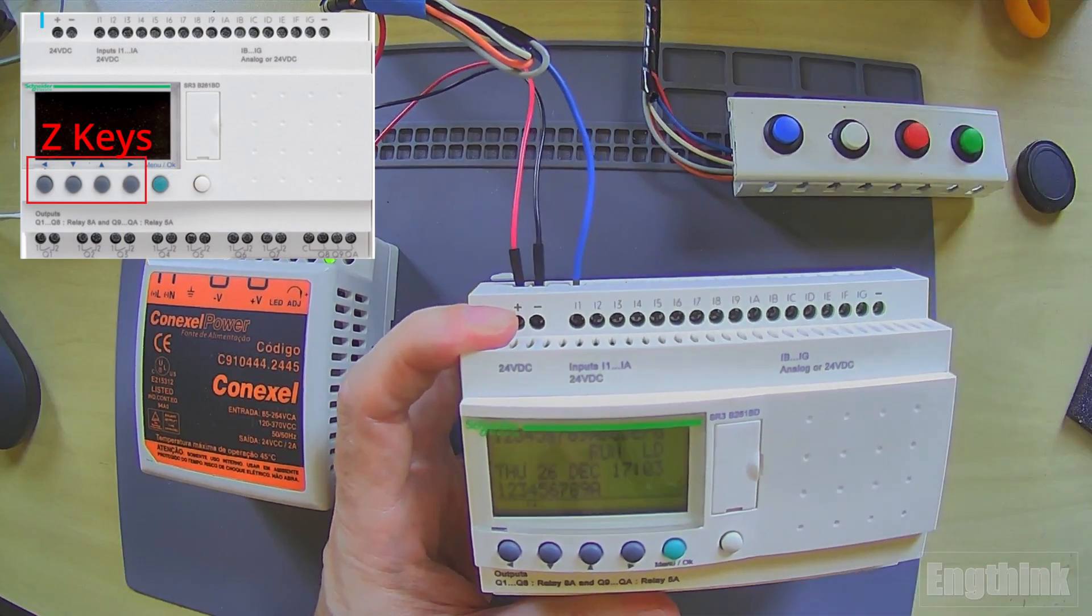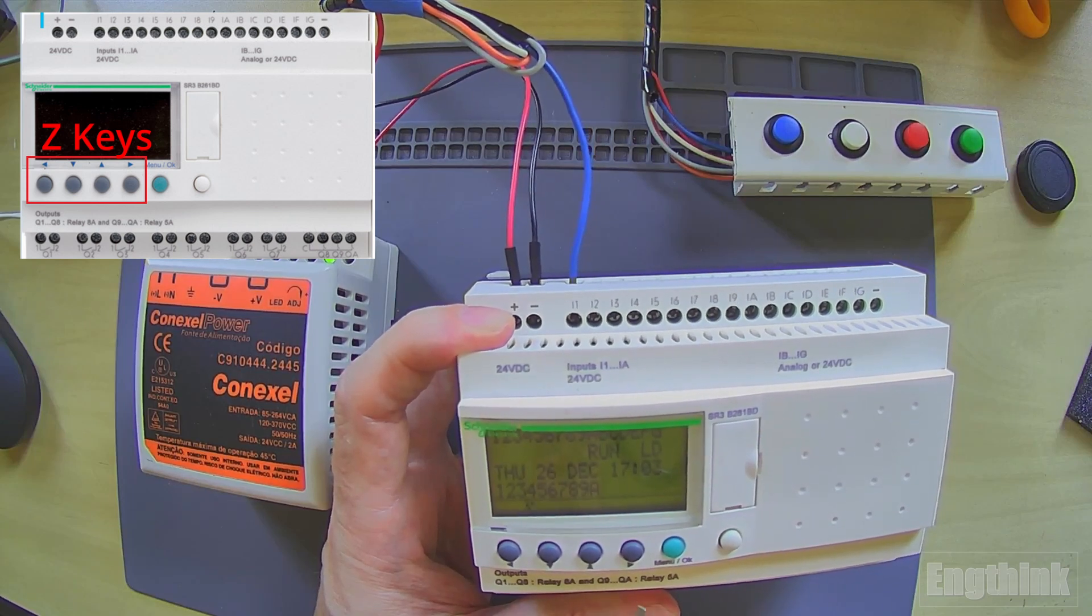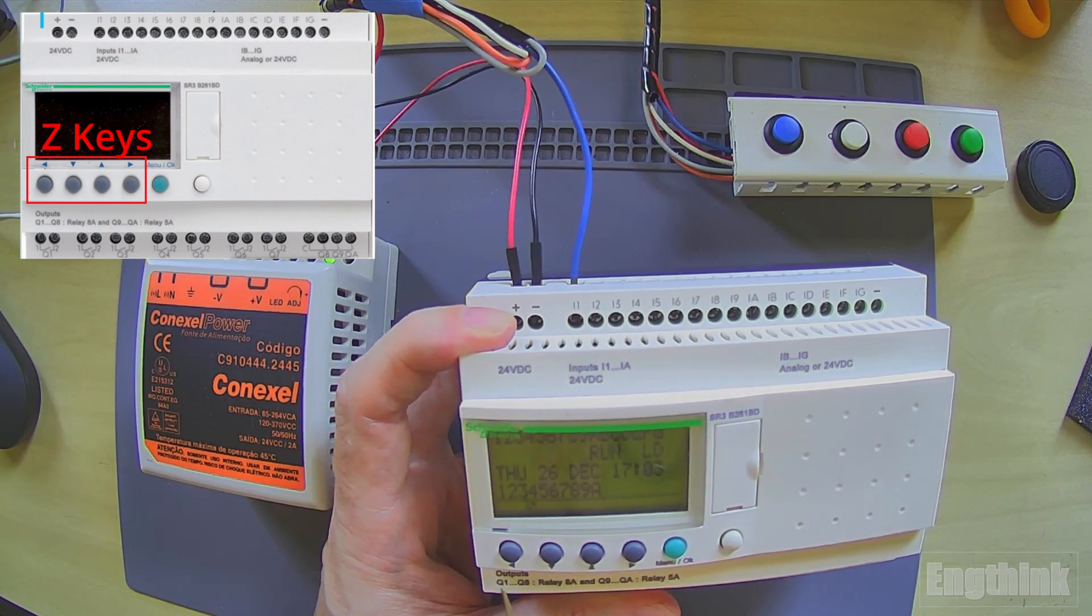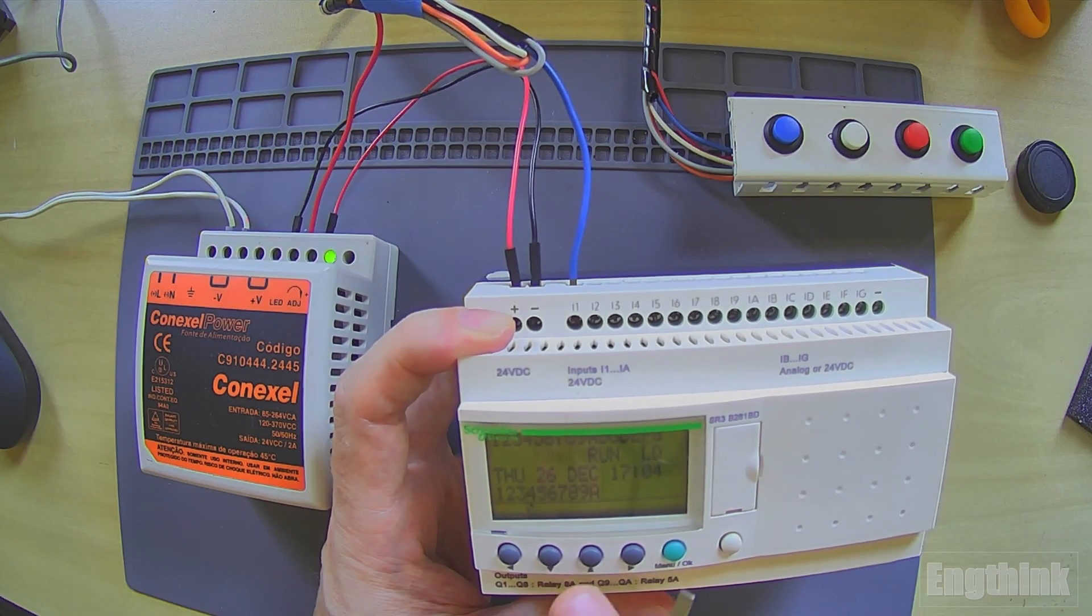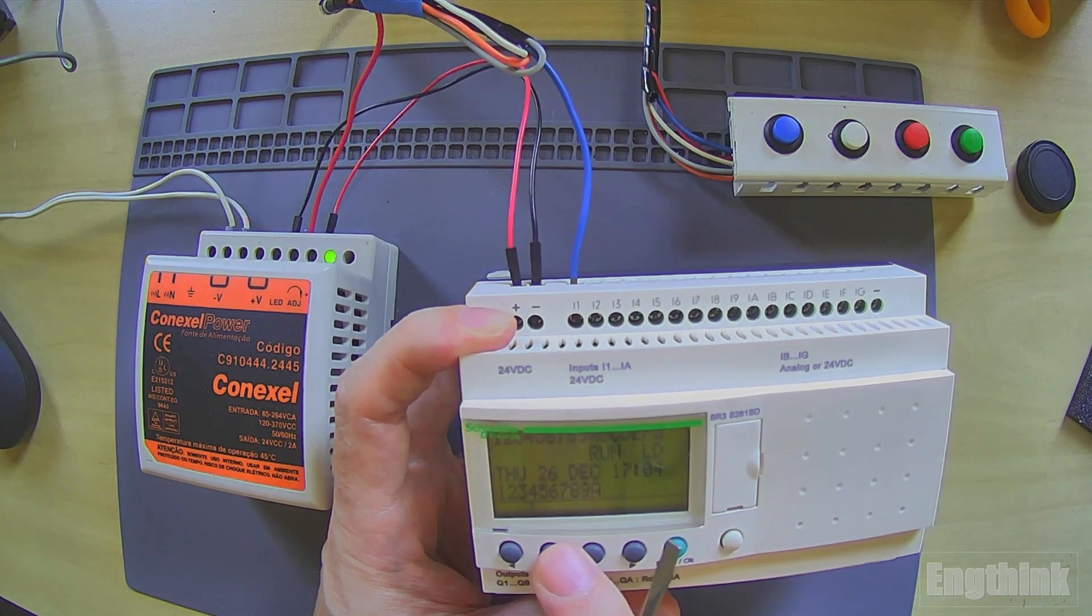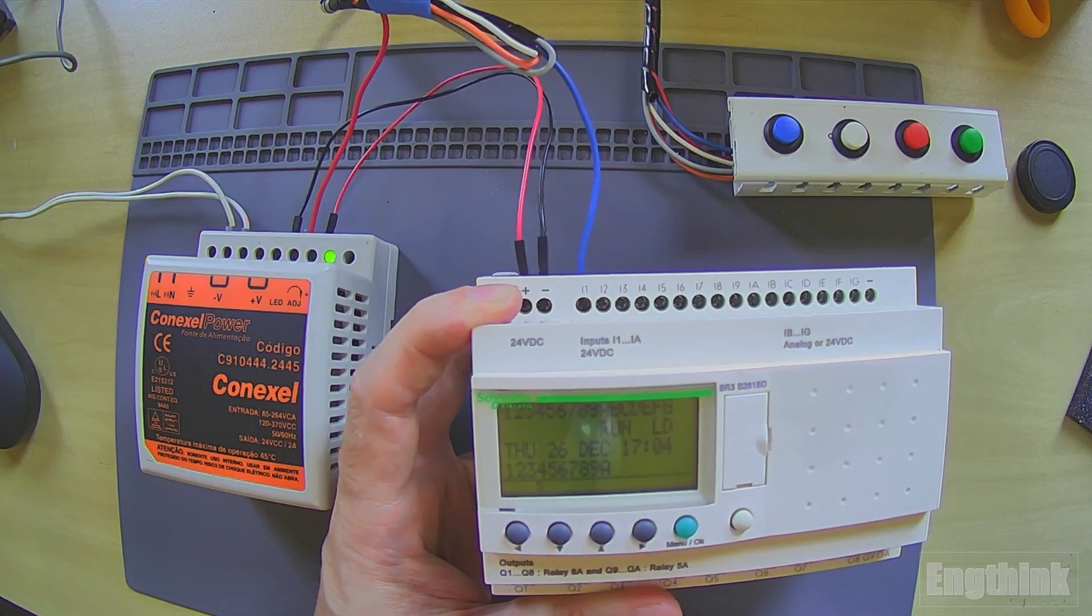Z keys are used for navigation. As you can see, these are the four keys in gray color. Basically what we can do with these keys is navigate through the menu and make the programming using the buttons on the display.